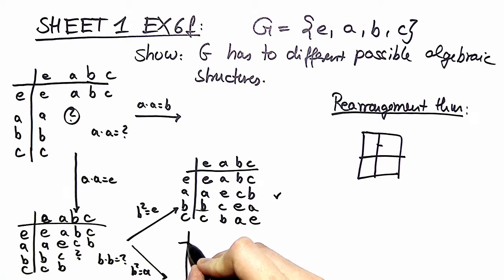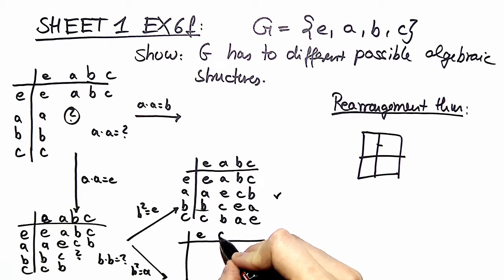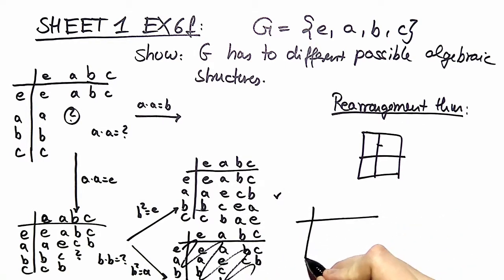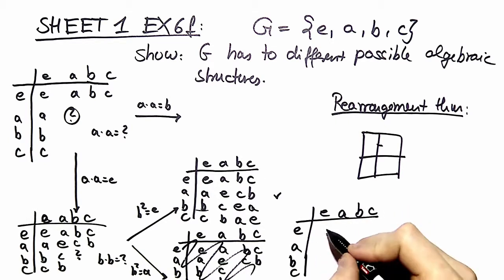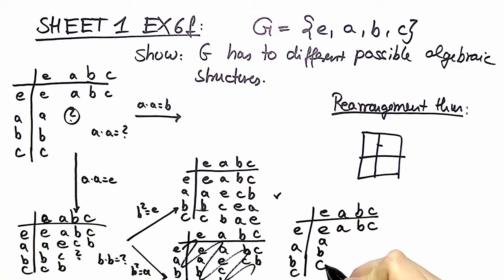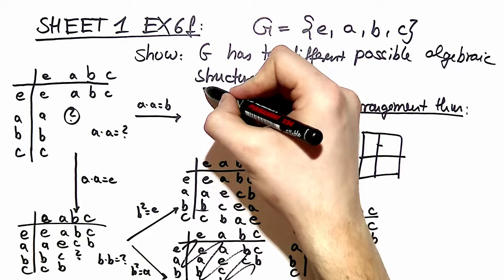The other possible multiplication table for a four element group we can write down here. We set up with e, a, b, c in the rows and columns. So here e, then c, b, c, b. And then here we've got a. And then we use the rearrangement theorem again just as we did right here to obtain e, e, a. Okay.